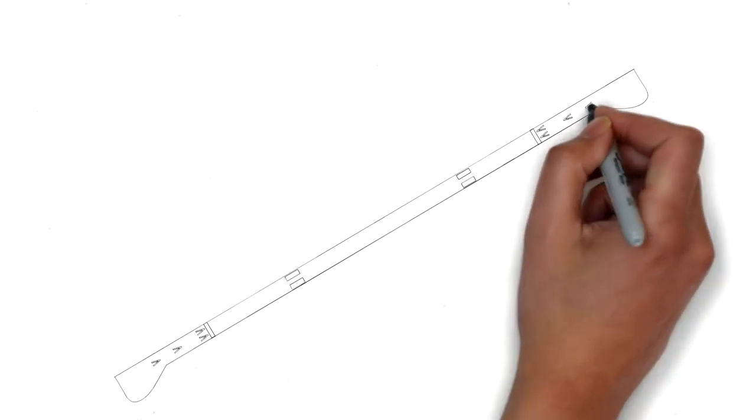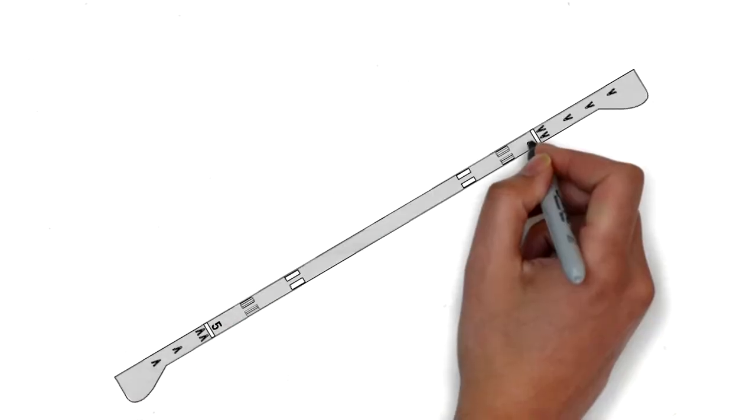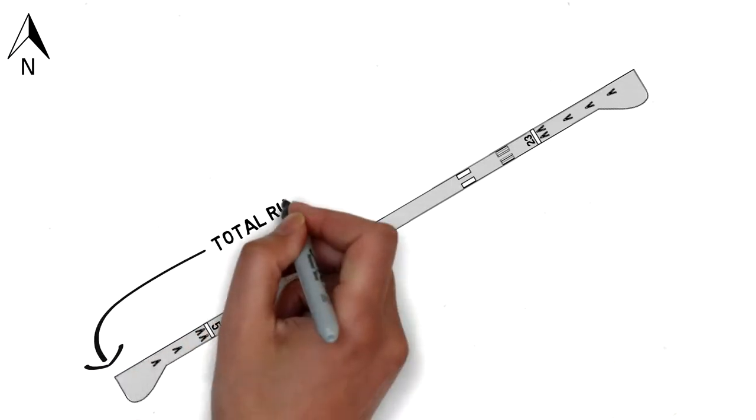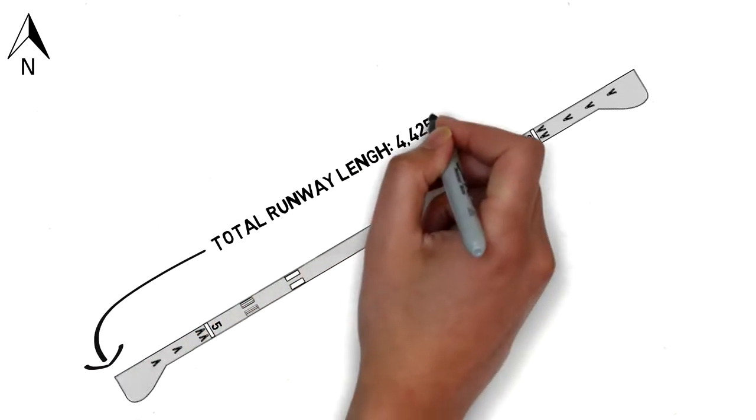First, let's take a look at the asphalt runway so we can get a better understanding of what we're working with. The total runway length is 4,425 feet with a width of 50 feet.